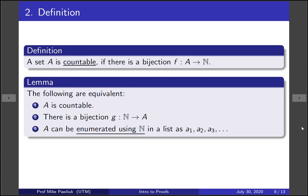So the following are equivalent. A is countable. There's a bijection G from the naturals to A, so we've swapped the order of the domain and the codomain. And the name countable comes from the following. A can be enumerated using the naturals in a list as A1, A2, A3, without any repeats.